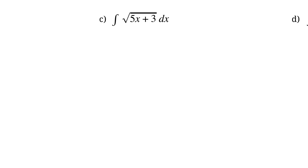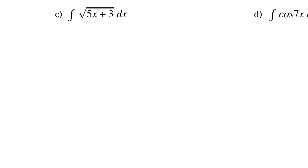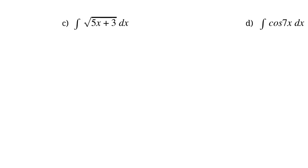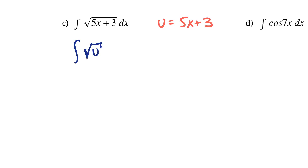So that's well and good — we can do that for a lot of these questions. But what happens when they get a lot more complicated? Then we actually have to make a substitution. Notice how we haven't actually made a substitution yet in these equations. Let's try to do that here. The thing underneath the square root is probably a good bet, so let's call that u — so u equals 5x + 3.